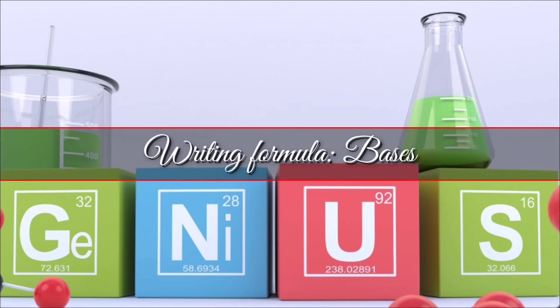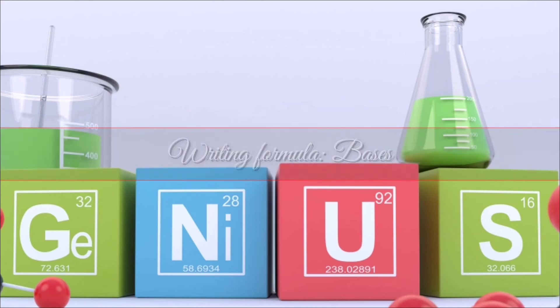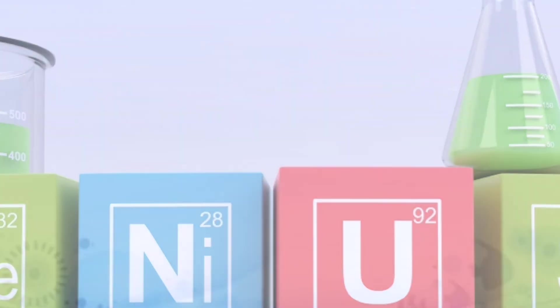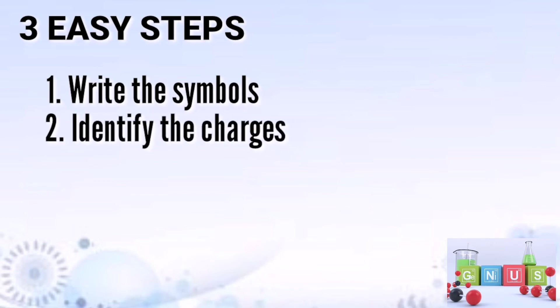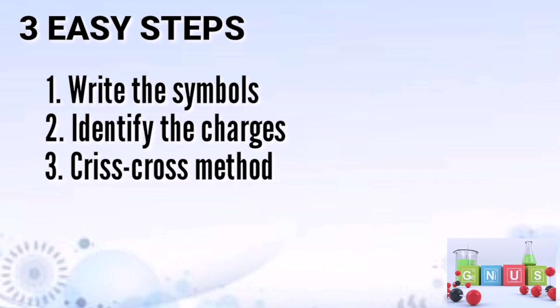In this video, you are going to learn how to write basic compound formulas in three easy steps. First, write the symbols of the elements in the compound. Second, identify the charges and then perform the criss-cross method. If you are not yet familiar with the symbols and the charges of the elements, please get your periodic table as your reference.